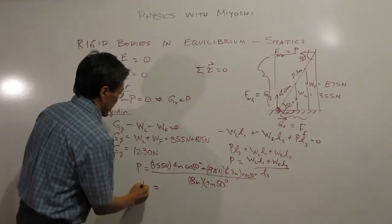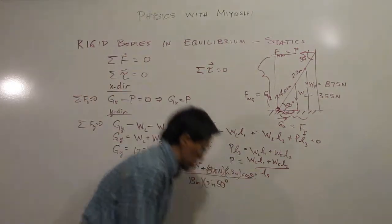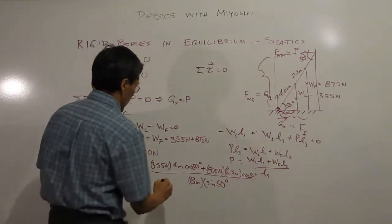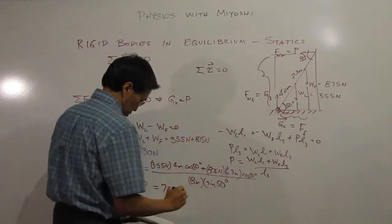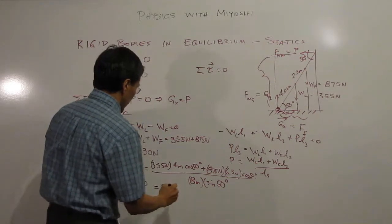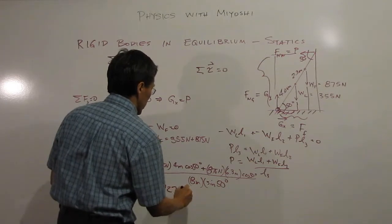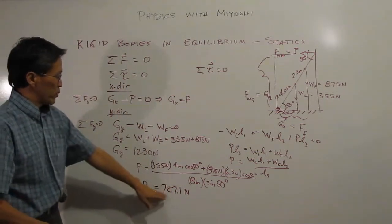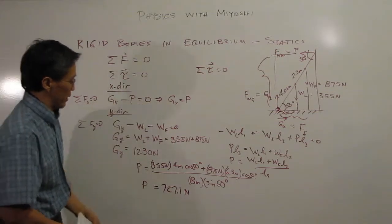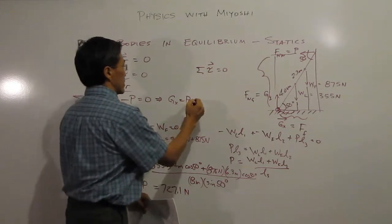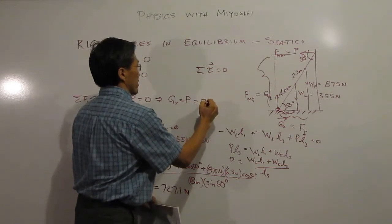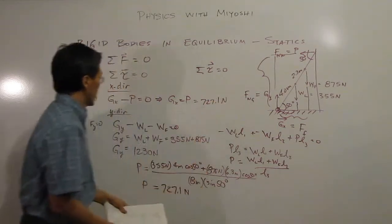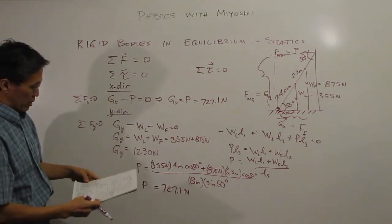Plugging in: P equals (355 newtons × 4 meters × cos 50°) plus (875 newtons × 6.3 meters × cos 50°), all divided by (8 meters × sin 50°). Working through that math gives P approximately equal to 727.1 newtons. And since GX equals P, GX is also 727.1 newtons.